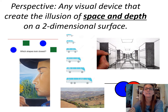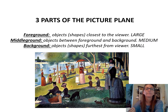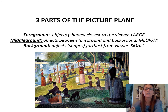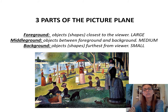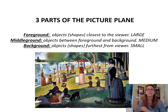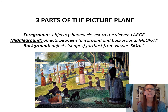Before we do that, you have to remember there are three parts to your picture plane. You have the foreground, which contains things closest to you — like the lady and the man with the umbrella. Then you have the middle ground, which contains things in the middle that are medium-sized.